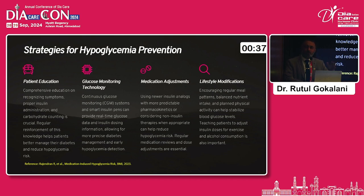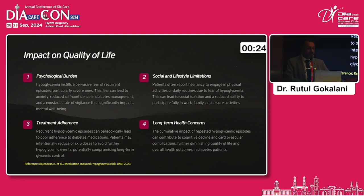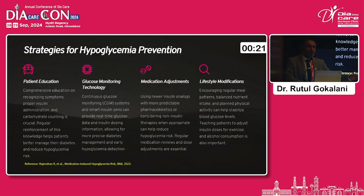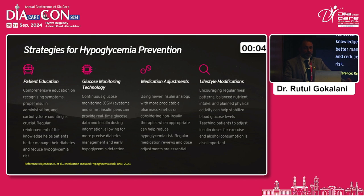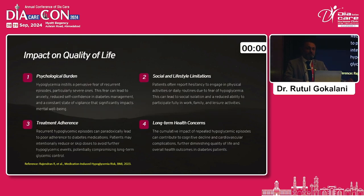Strategies for hypoglycemia prevention — though already explained in earlier talks — include patient education, which is most important. I would say the most important thing to prevent hypoglycemia is self-monitoring: self-monitoring of blood glucose, whether by glucose meter or continuous glucose monitoring. What gets measured gets done, so all patients should check their blood sugar regularly and we should educate them every visit. Medication adjustment is also key — for patients with frequent hypoglycemia, we should change medications and try to avoid those that can cause hypoglycemia.